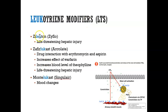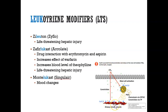Leukotriene modifiers are medications that help modify or block leukotriene chemicals. When you have asthma, your body releases leukotriene chemicals — these constrict the airway smooth muscle, making it hard to breathe. What leukotriene modifiers do is prevent these chemicals from constricting the airway, opening it up so you can breathe easily without feeling constricted.